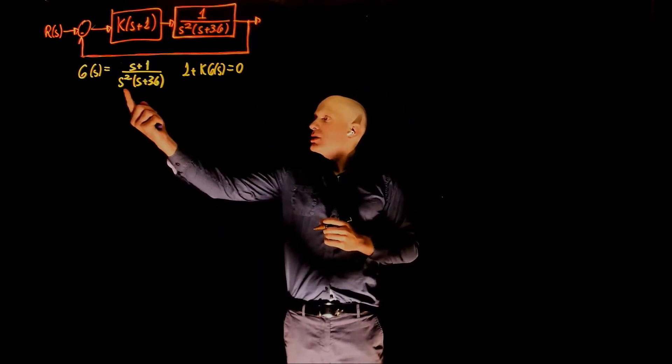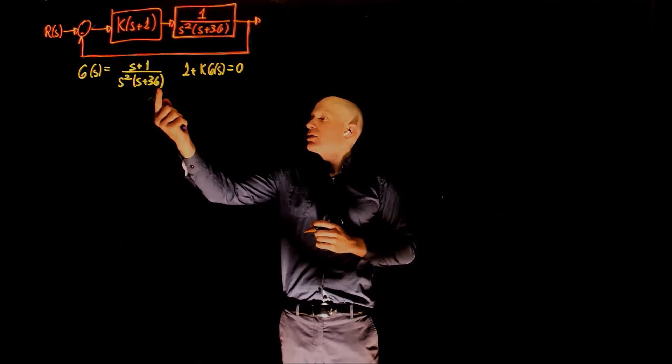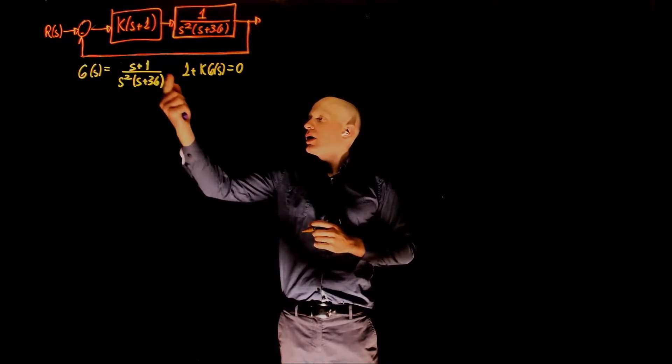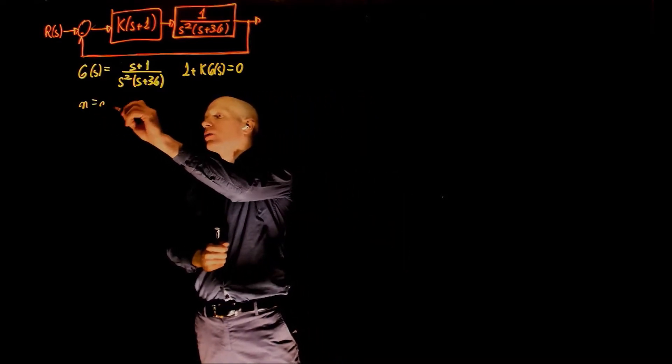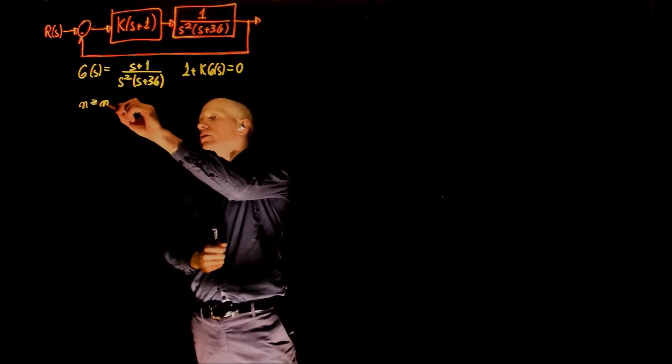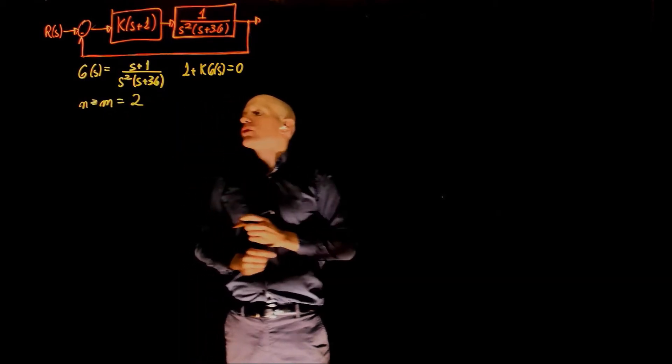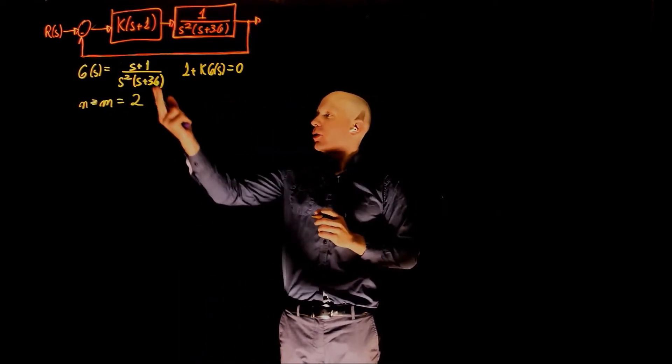We have three poles, this is s squared and the s plus 3.6, and we have 1 zero at negative 1. So n minus m is 2, for three poles and 1 zero.